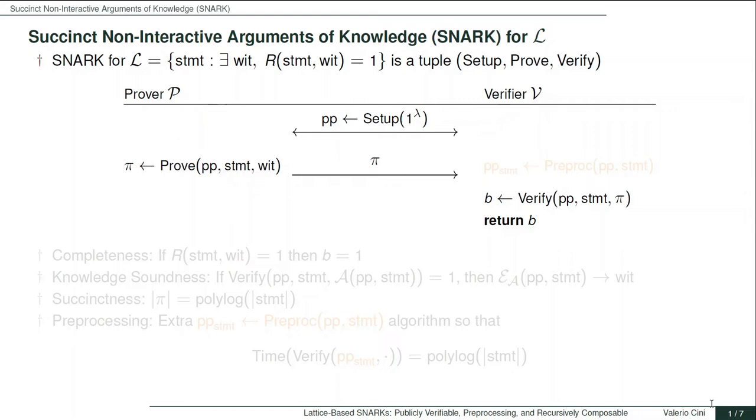The public parameters are generated by running the setup algorithm and are distributed to both prover and verifier. Whenever the prover wants to prove that some statement is in the language, it runs the proof algorithm using the corresponding witness and obtains a proof pi which is sent to the verifier. Using such a proof, the verifier can run the verify algorithm and decide whether to accept or reject.